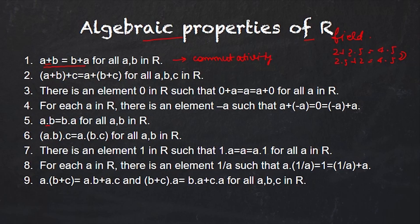The second property is (a + b) + c = a + (b + c), known as associativity. This is also very trivial — you can take any example of a, b, c in R and verify that this property holds.